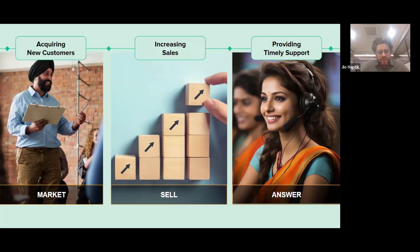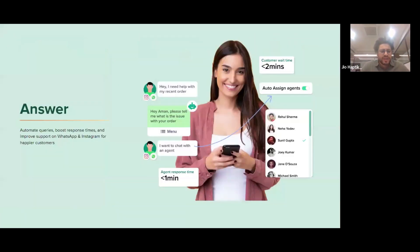We have introduced features across all three categories — market, sell, and answer. We've already discussed market and sell features. Today we're going to discuss the answer feature. This answer category should help you automate your queries, boost response times, and improve customer support on WhatsApp and Instagram for happier customers.